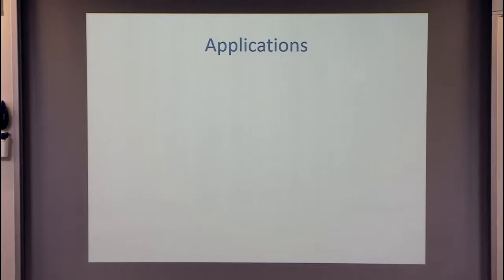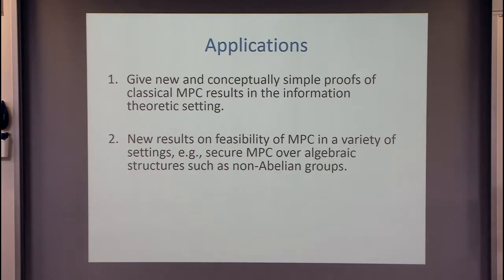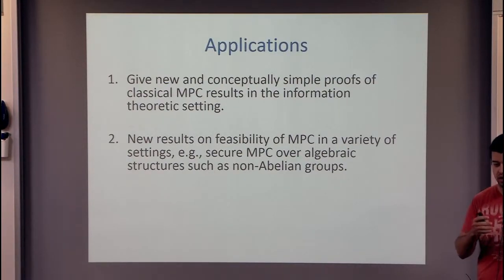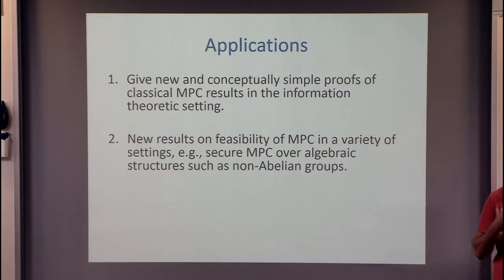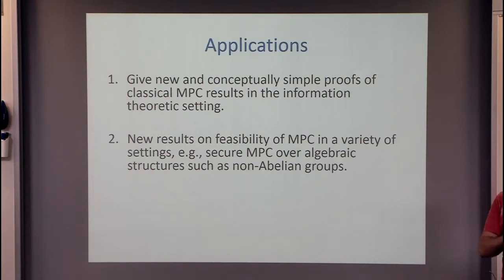Before I explain how this works, let me mention some applications. First, this allows us to reprove classical results or variants such as BGW in a way that I think is conceptually simple and appealing. The approach turns out to be very flexible — not hardwired to one model. It works in all kinds of MPC models, including settings where parties have black-box access to some underlying algebraic structure like a field, ring, or abelian group, and we can actually improve on some existing results in these special models.